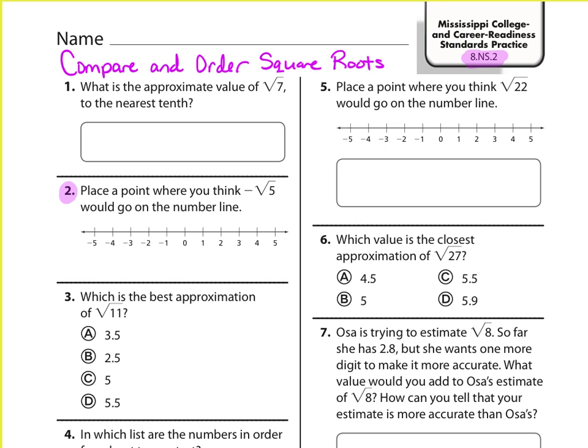It says place a point where you think negative square root of 5 would go on a number line. So I'm going to start in my calculator, and I'm just going to type in negative square root of 5, and I get negative 2.23 and it keeps on going. But what I need to notice is that this is negative 2 point something. It's going to be between negative 2 and negative 3. So when I look on my number line, negative 2 point something will be somewhere around here, a little closer to negative 2 than negative 3.